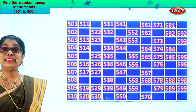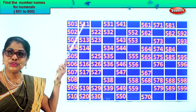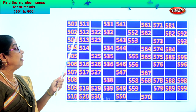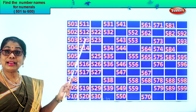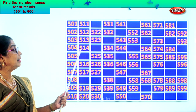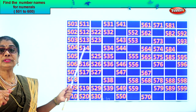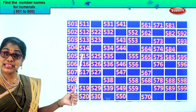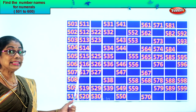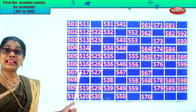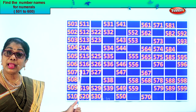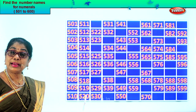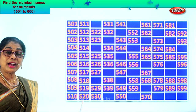After ten comes eleven, so five hundred and eleven. Are you enjoying it? Good. After eleven comes twelve, five hundred and twelve. Five hundred and thirteen. Five hundred and fourteen. After fourteen, fifteen, five hundred and fifteen. Five hundred and sixteen. Five hundred and seventeen. After seventeen, eighteen, five hundred and eighteen. Five hundred and nineteen.